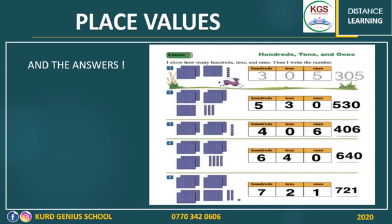Number three. How many ones do you see? Six — you can count them: one, two, three, four, five, and six — put six in the ones place. How many groups of tens do you see? None — put zero in the tens column. What about the hundreds? One, two, three, and four — there are four hundreds or four groups of hundreds. So this is number 406.